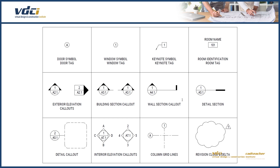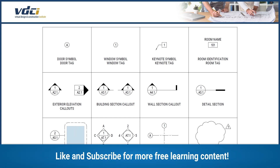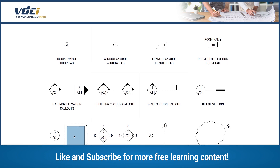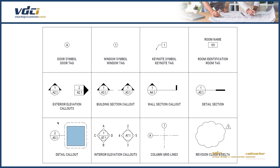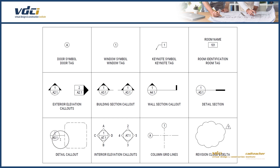Another option might be that I have a floor plan with an enlarged area, which might be another detail call-out. We have a dashed line that goes around the area that's going to be enlarged in the detail. To see this enlarged area, go and look at image 2 on page A5.1.